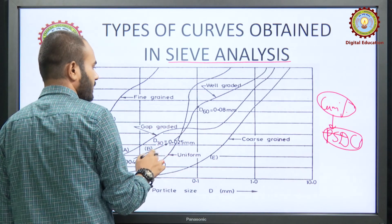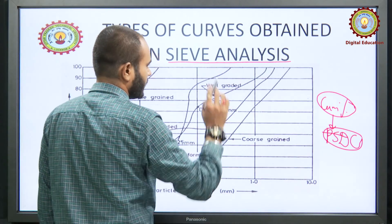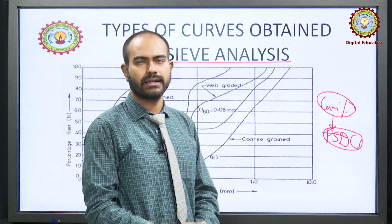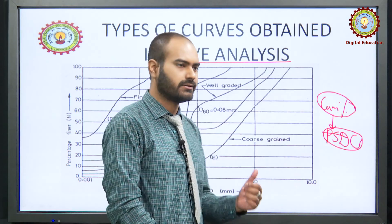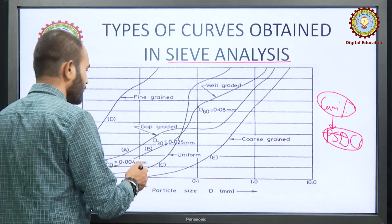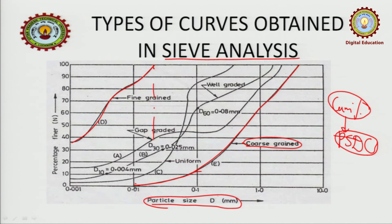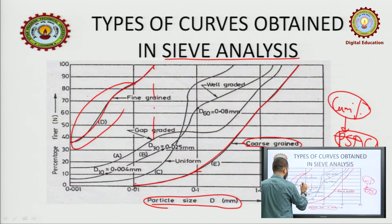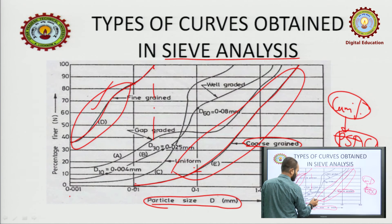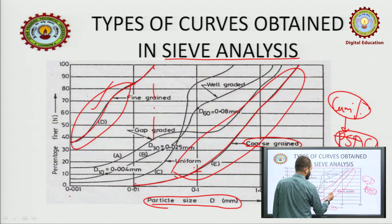We do not always get a smooth curve. In the field, the soil may be gap graded or well graded or anything like that. Looking at this diagram: first, this is a coarse grain soil — you can see it written here. This is a fine grain soil. These are differentiated just by particle size. From here to here it is fine grain, because the maximum part of particles falls in this region. And this is coarse grain because its maximum part falls in the coarser region.